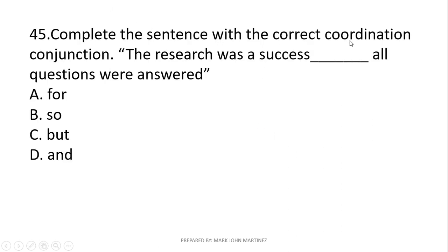Next: Complete the sentence with the correct coordinating conjunction: 'The research was a success, blank all questions were answered.' The correct answer is 'for' — letter A: 'The research was a success, for all questions were answered.' Another meaning of 'for' as a coordinating conjunction is 'because' — the research was a success because all questions were answered.